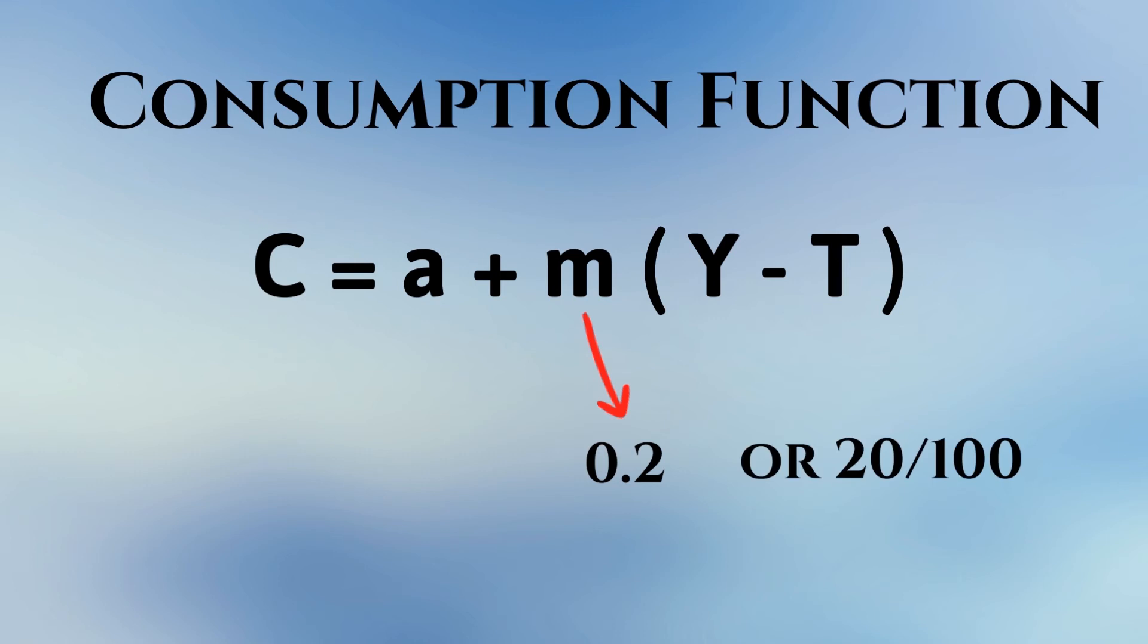Generally, MPC is greater than 0 but less than 1. MPC greater than 1 means that changes in income lead to proportionately larger changes in consumption.